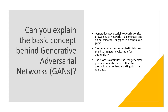Can you explain the basic concept behind generative adversarial networks, GANs? GANs consist of two neural networks: first is a generator and second is a discriminator, engaged in a continuous game. The generator creates synthetic data and the discriminator evaluates it for authenticity — one creates it, the other checks it. The process continues until the generator produces realistic output that is really hard to distinguish from real data.